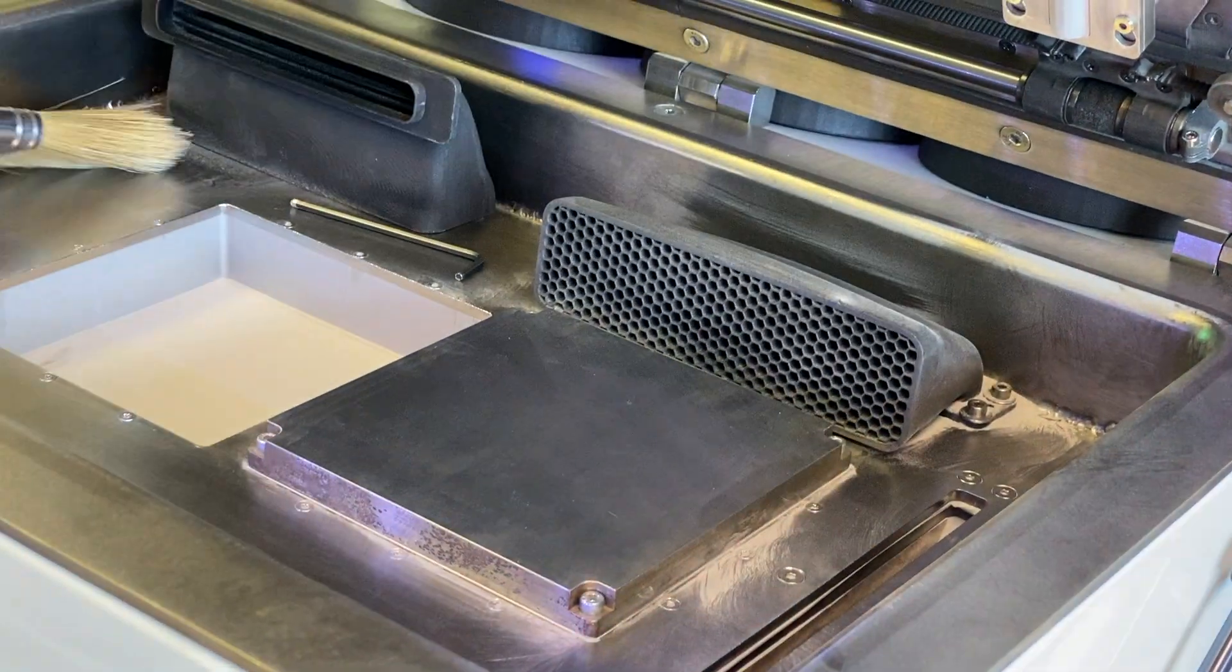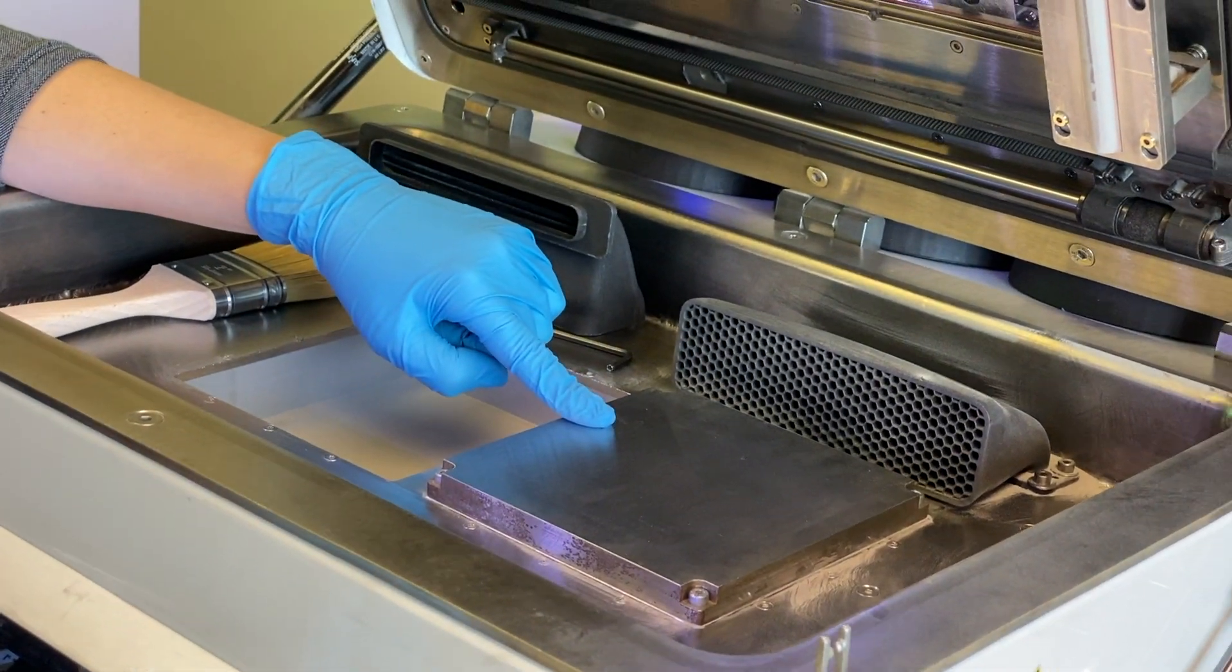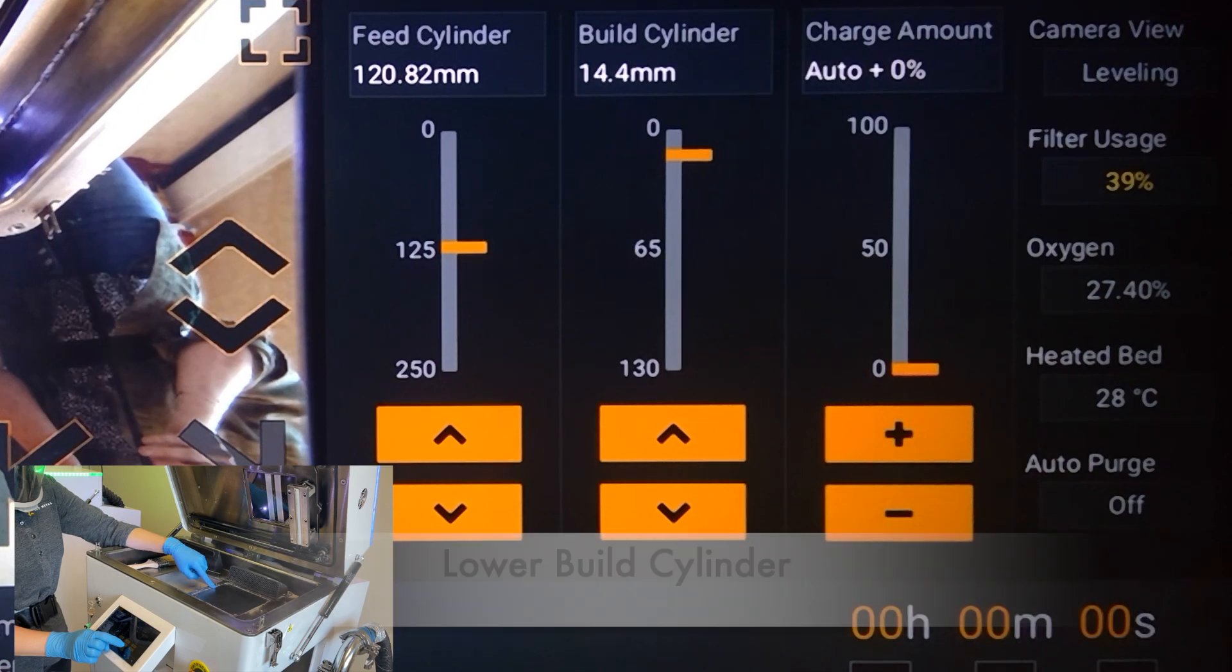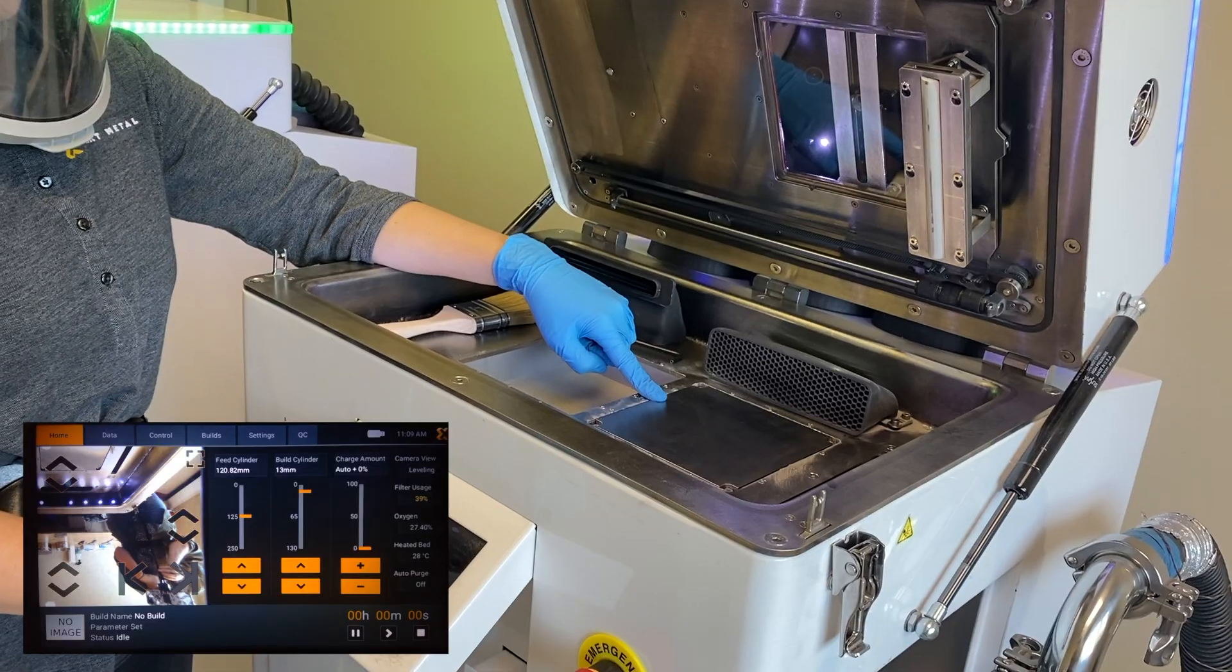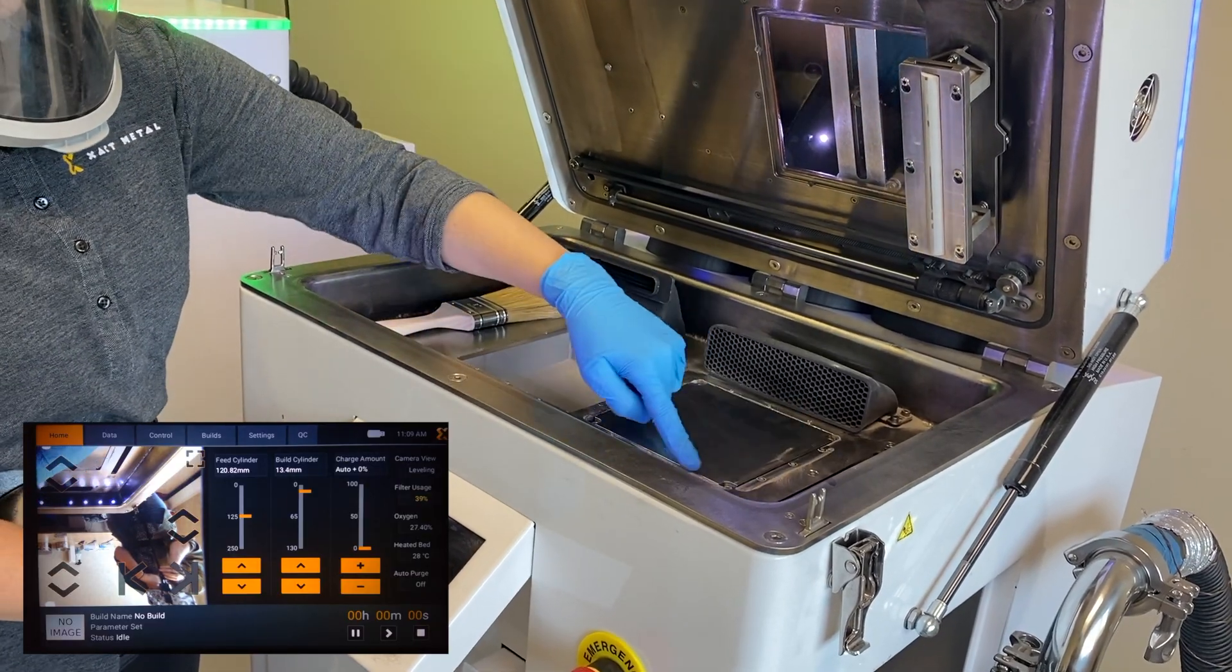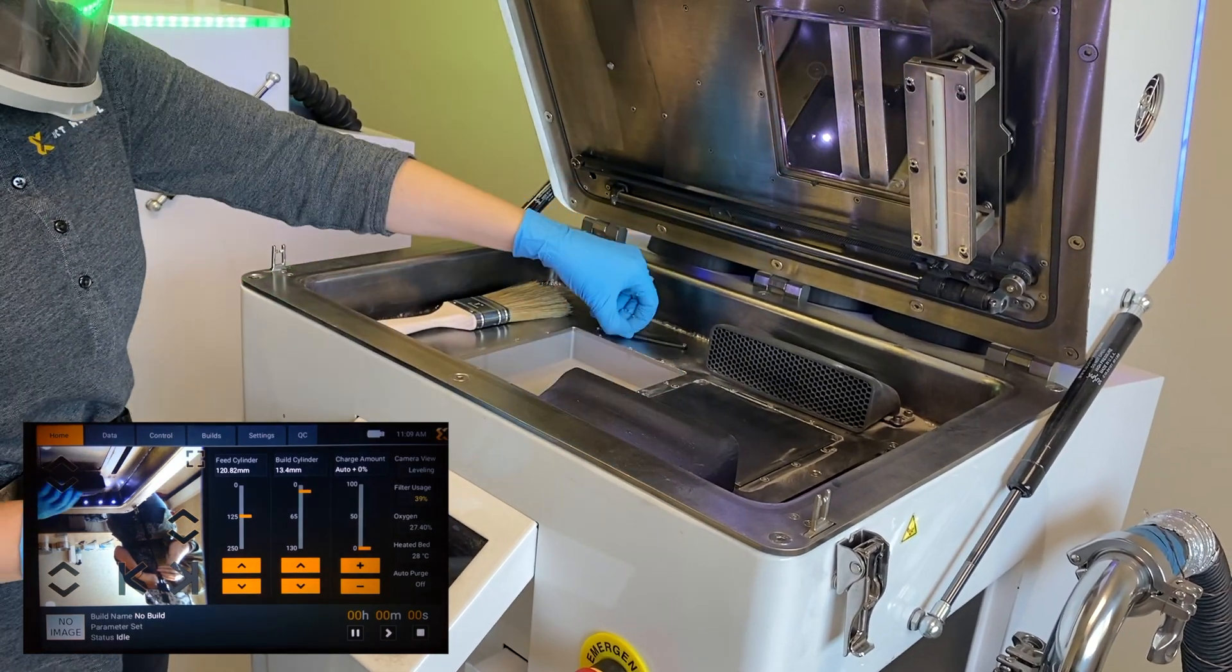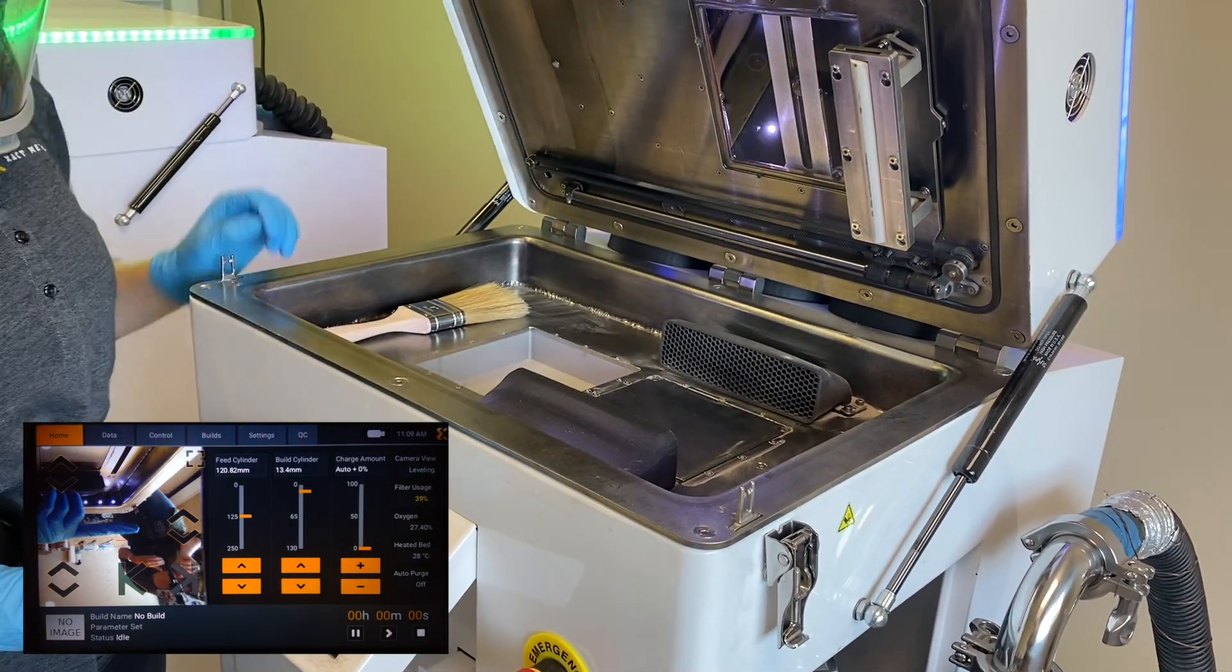Next we will lower the build plate and make it flush with the rest of the chamber. This doesn't have to be exact. I feel along each edge of the build plate to make sure it's roughly even with the chamber. Then I reinstall the low-pressure manifold to give the recoder clearance.